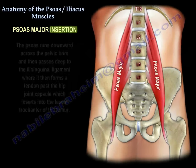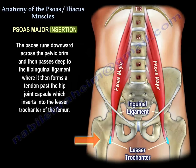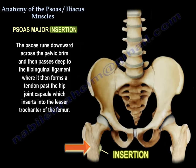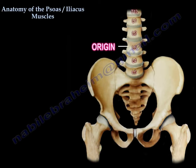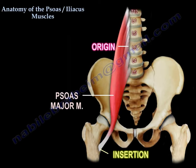Insertion: the psoas runs downward across the pelvic brim and then passes deep to the ilioinguinal ligament, where it forms a tendon past the hip joint capsule which inserts into the lesser trochanter of the femur. Here you can see the muscle from origin to insertion.